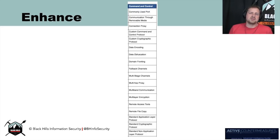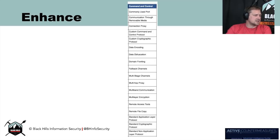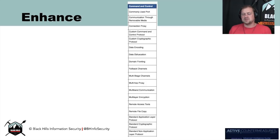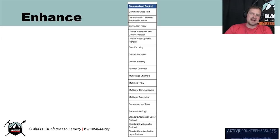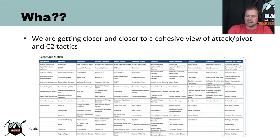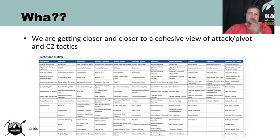Attackers love to use ports like port 80, 443, and 22 — standard web and SSH traffic — as well as FTP, Telnet, and so on. Communication through removable media is tough; Milton Security has some USB analysis tools that detect USB data exfiltration. Then there are techniques like connection proxy, custom C2 using cryptographic protocols, data encoding, obfuscation, and domain fronting — which I'm going to talk about in this webcast. Future webcasts will cover defensive evasion, lateral movement, collection, and endpoint analysis.